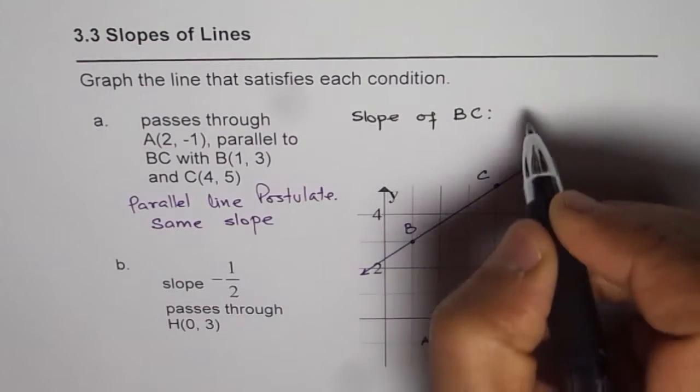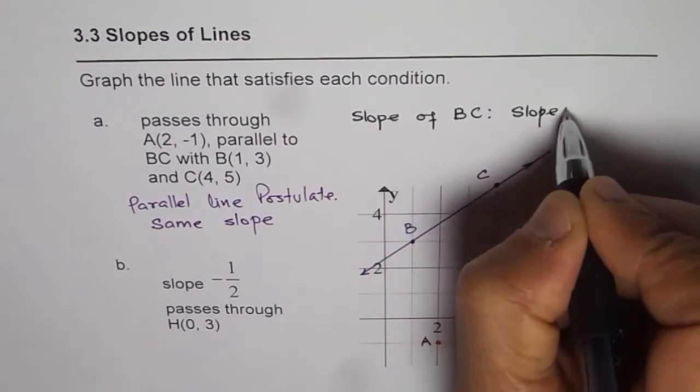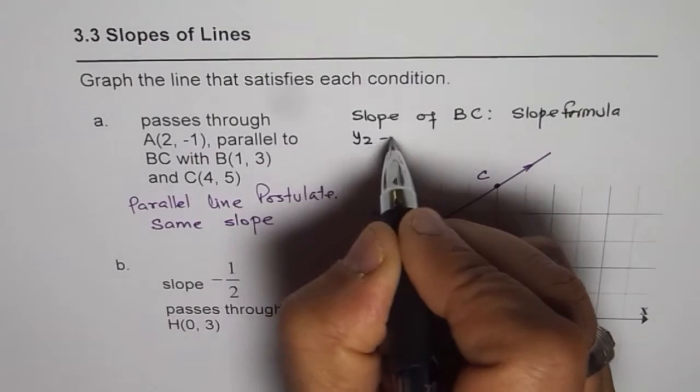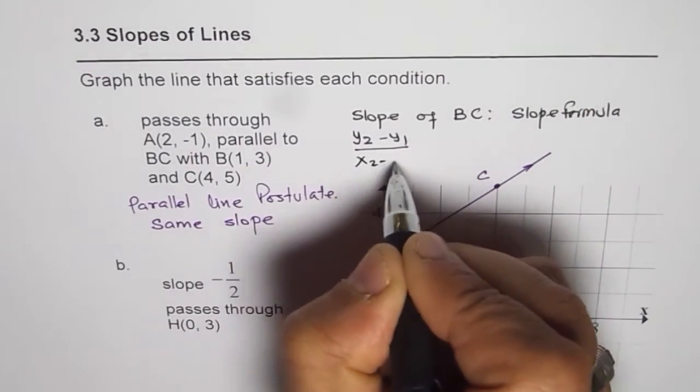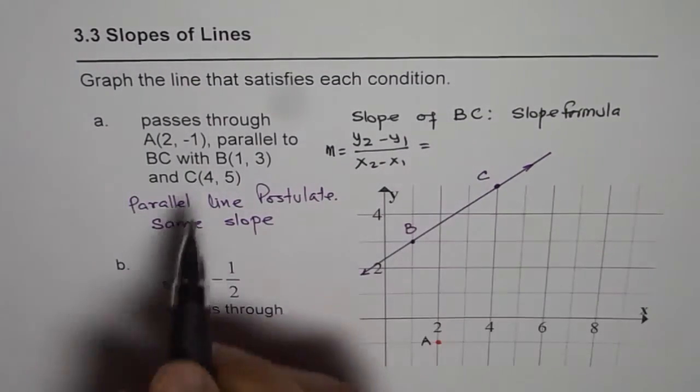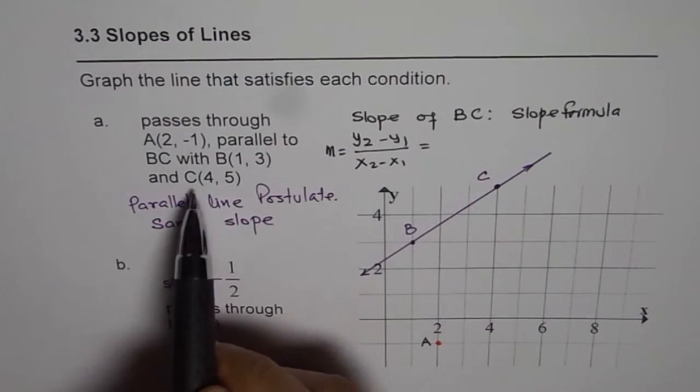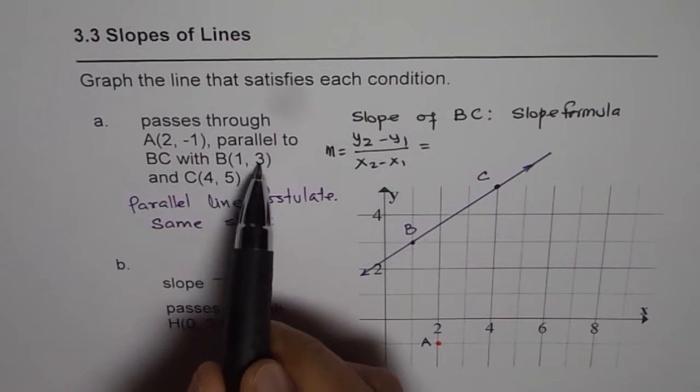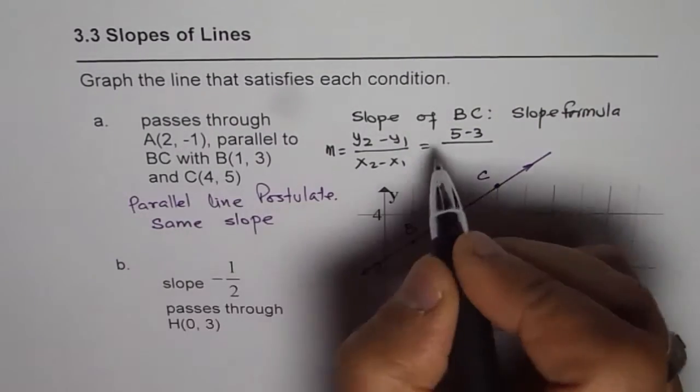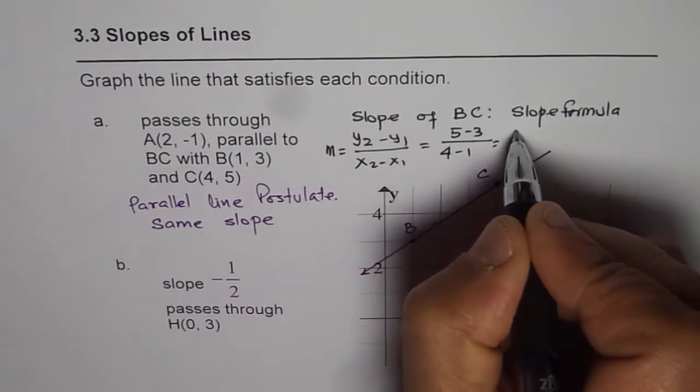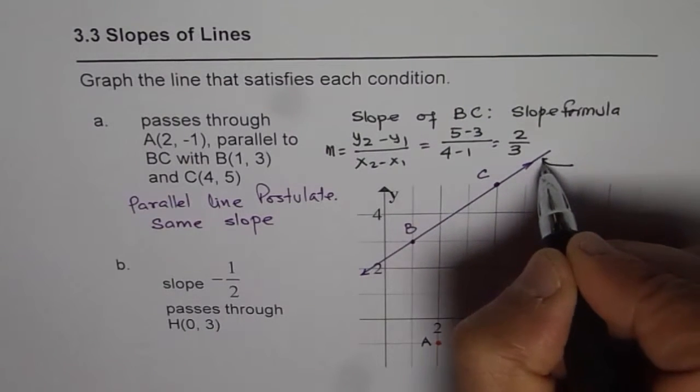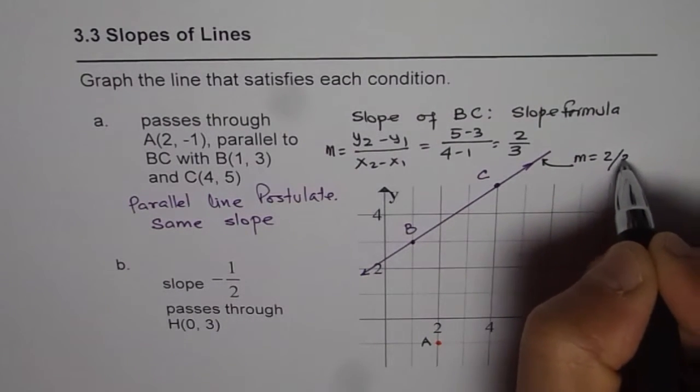We can use the slope formula, which is (y₂ - y₁)/(x₂ - x₁). For BC we are given coordinates (1, 3) and (4, 5). So we have (5 - 3)/(4 - 1), which equals 2/3. The slope of this line is 2/3.